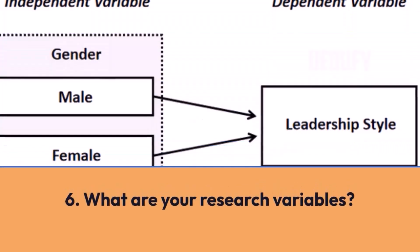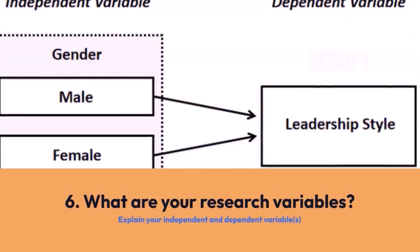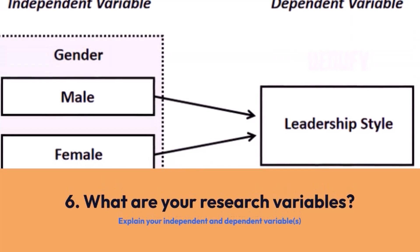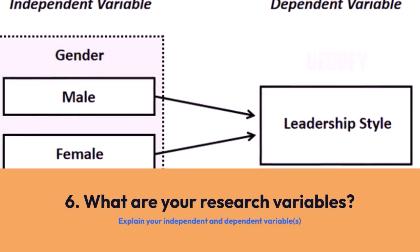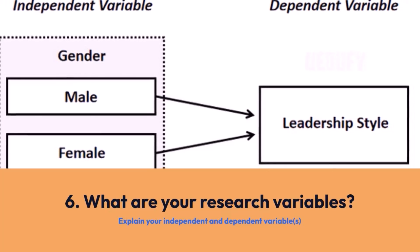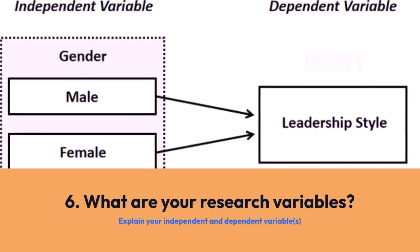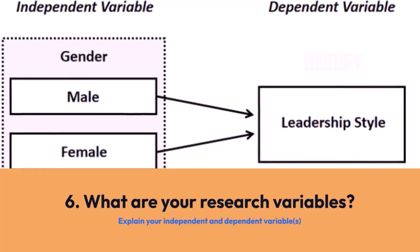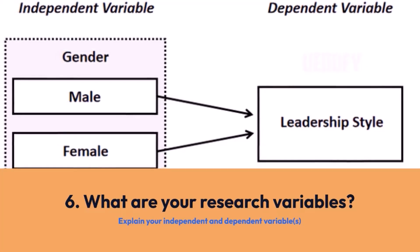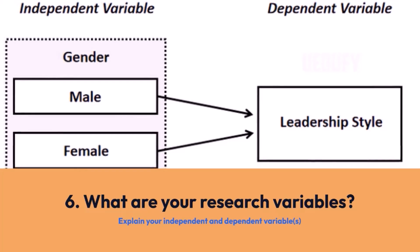Question number 6: What are your research variables? This question is asked in order to find out if you really know what your research project is all about. Explain your independent and dependent variables to show them you really grasp the concept of your research topic. Identify the variables in your project topic, define and explain them.